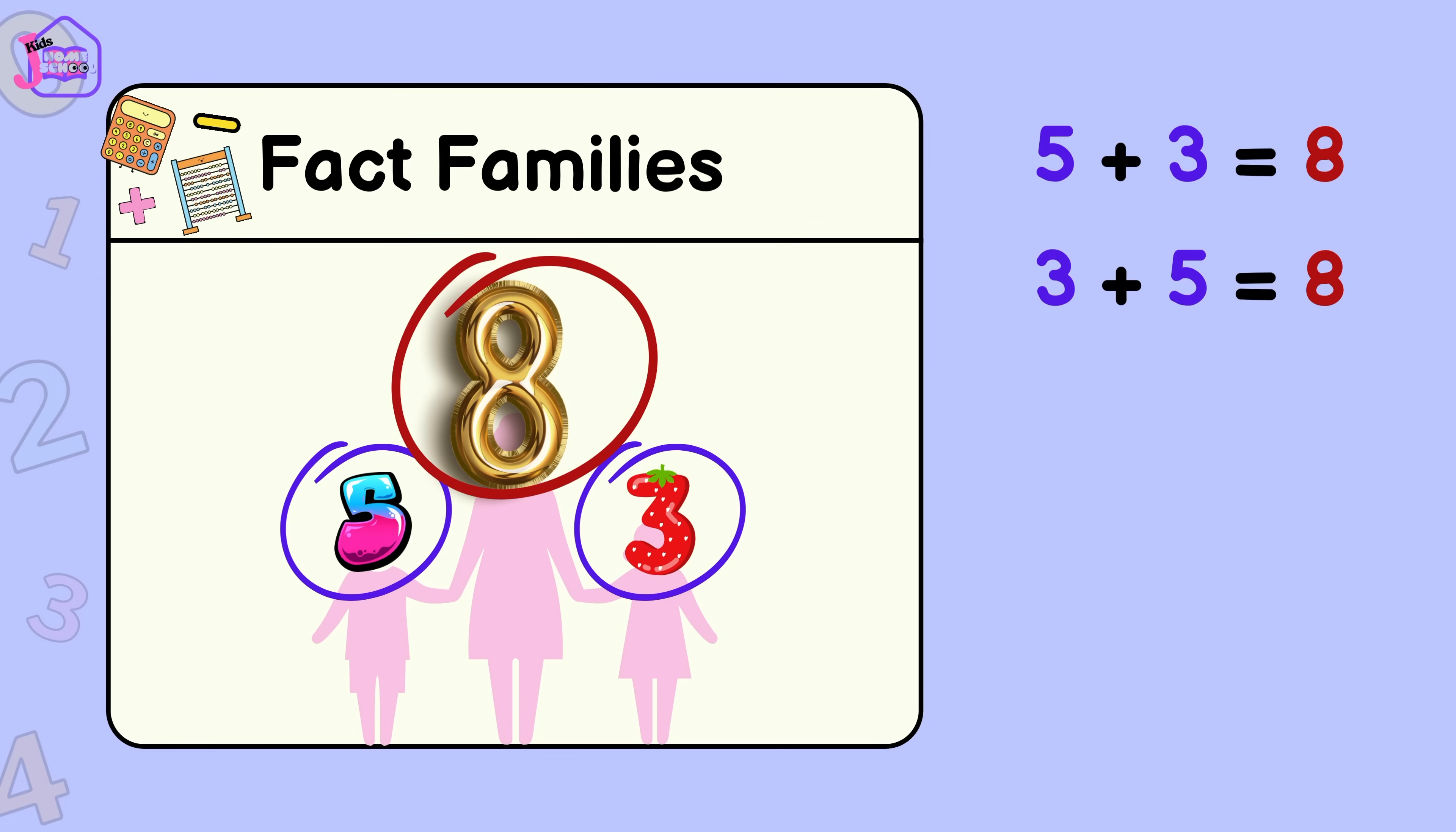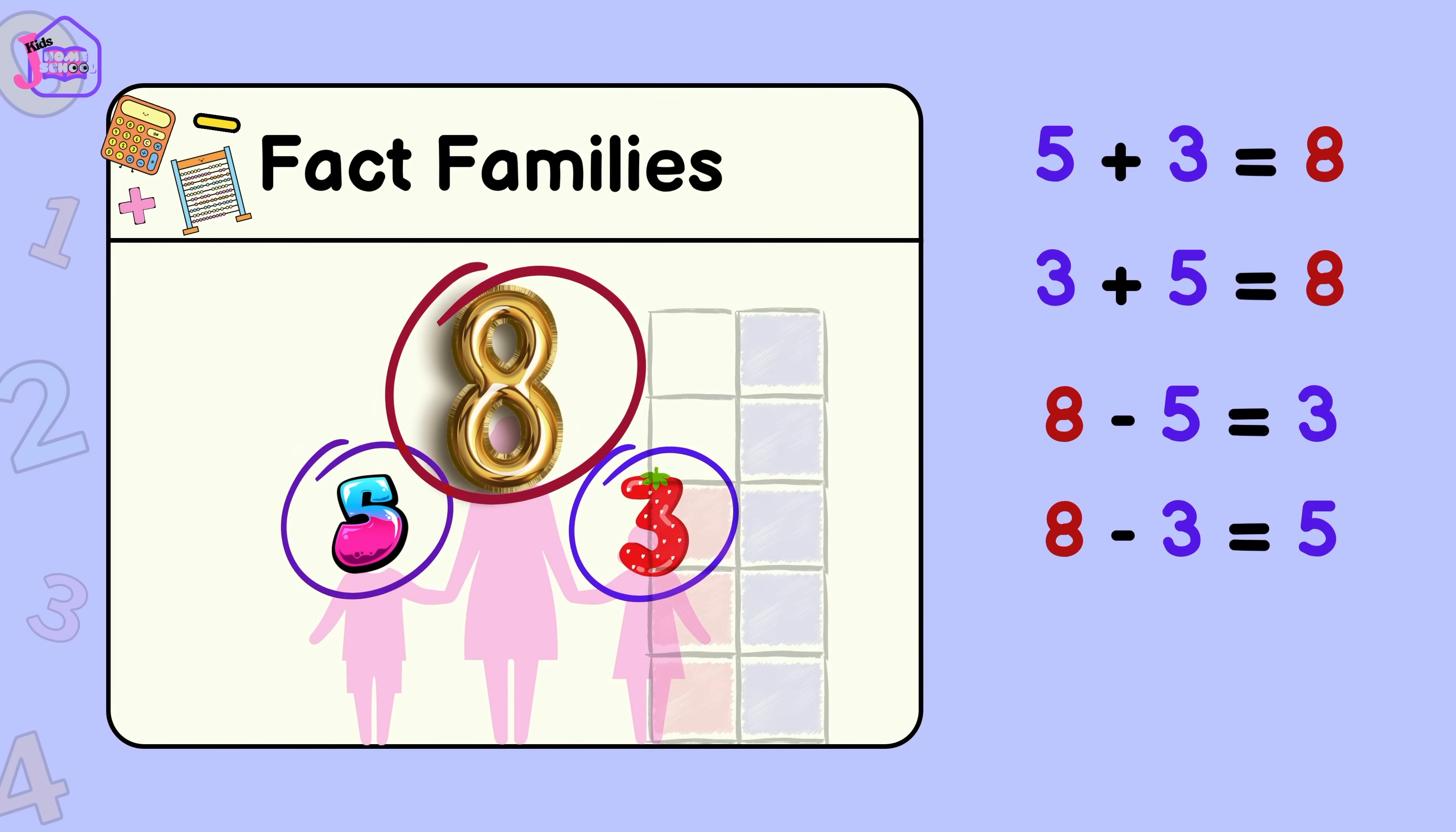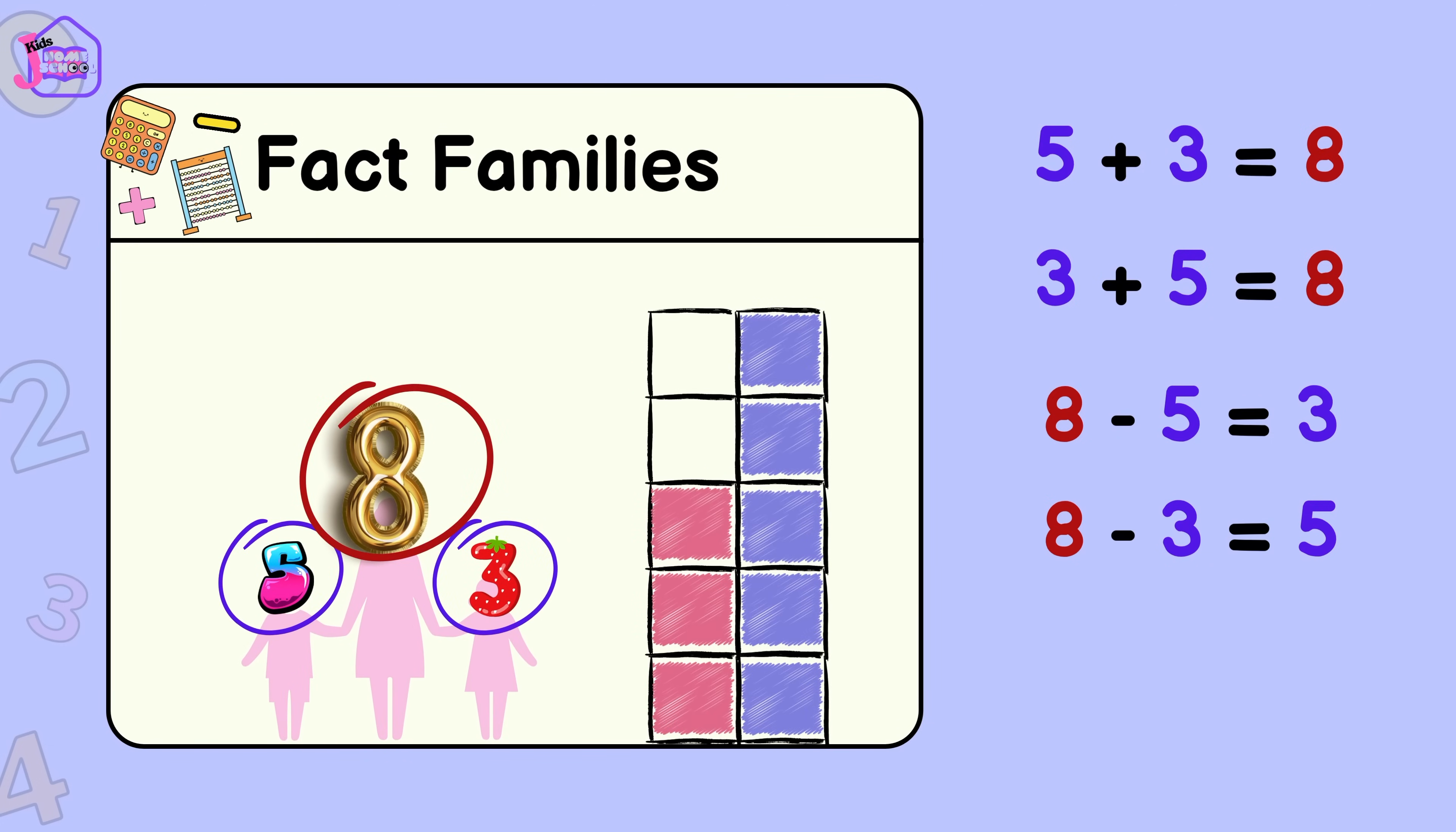Can you think of a subtraction calculation? That's right! 8 take away 5 equals 3. Now, let's find our last family member. Did you say 8 minus 3 equals 5? Our number fact family is complete.